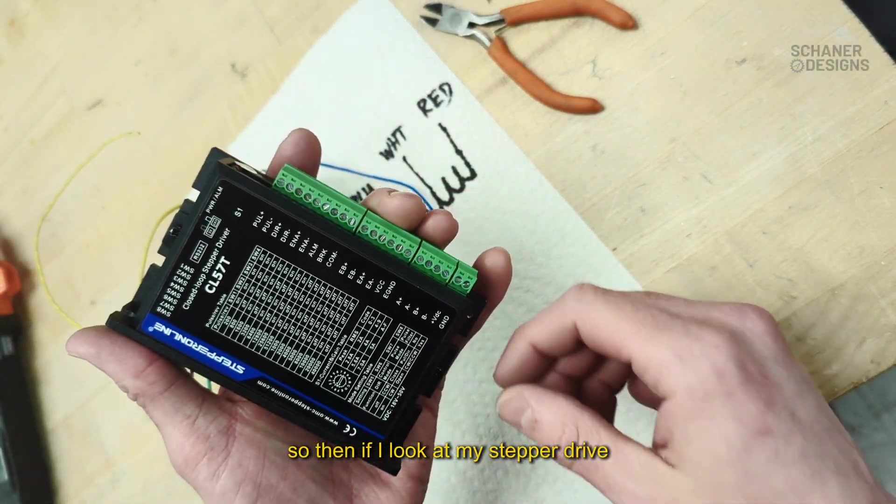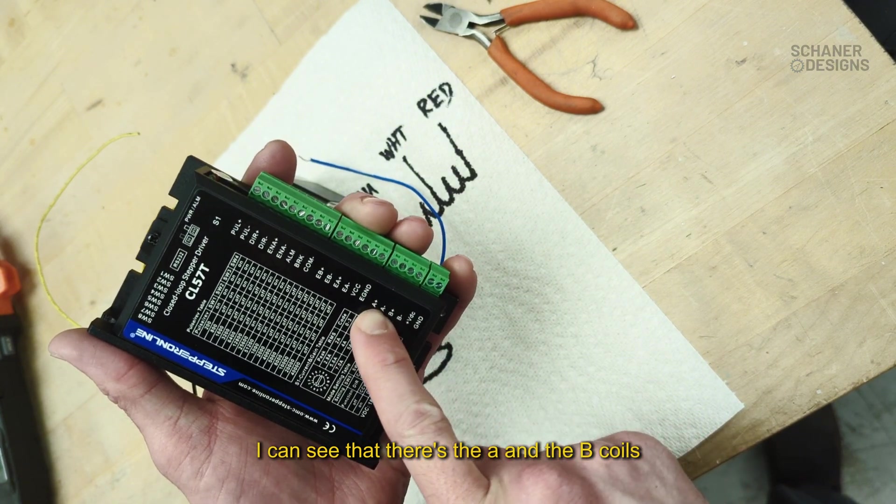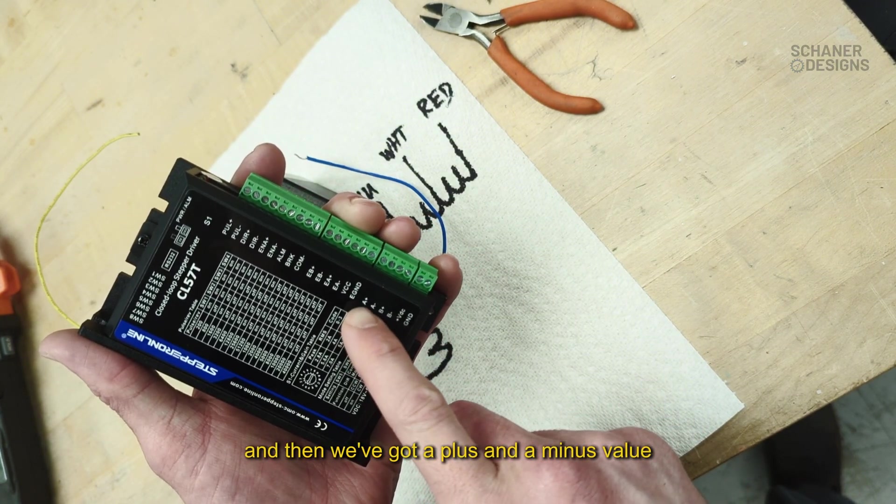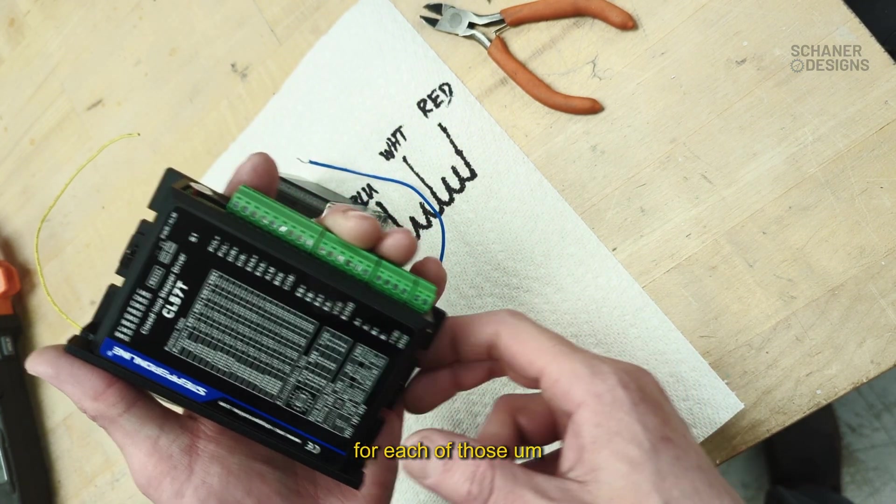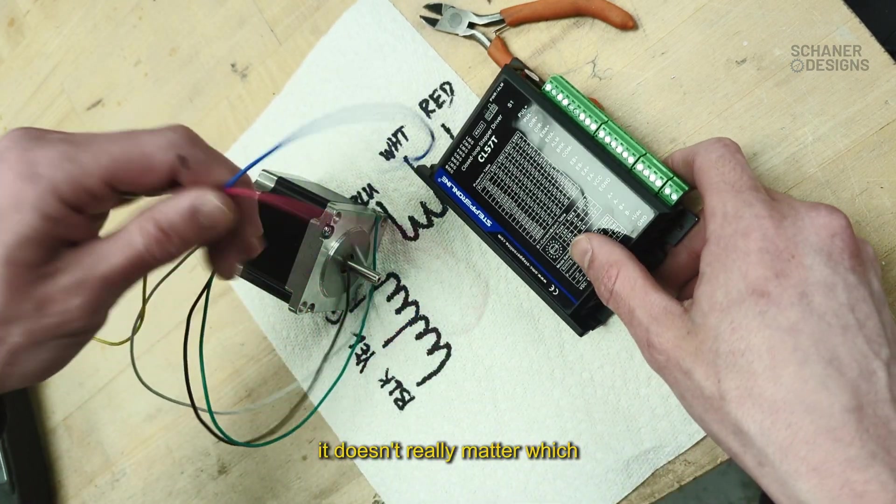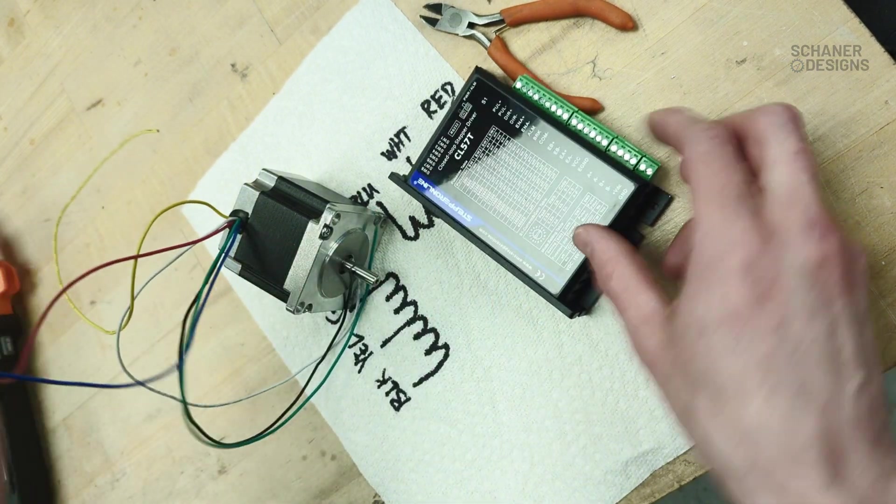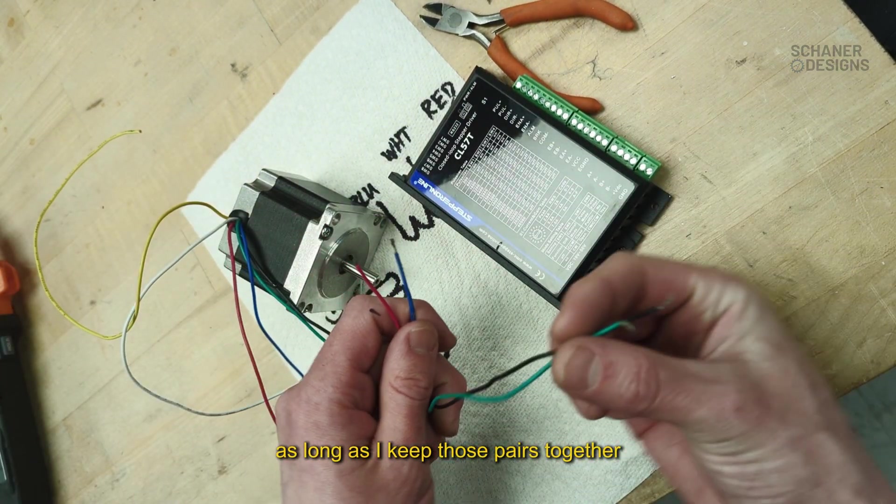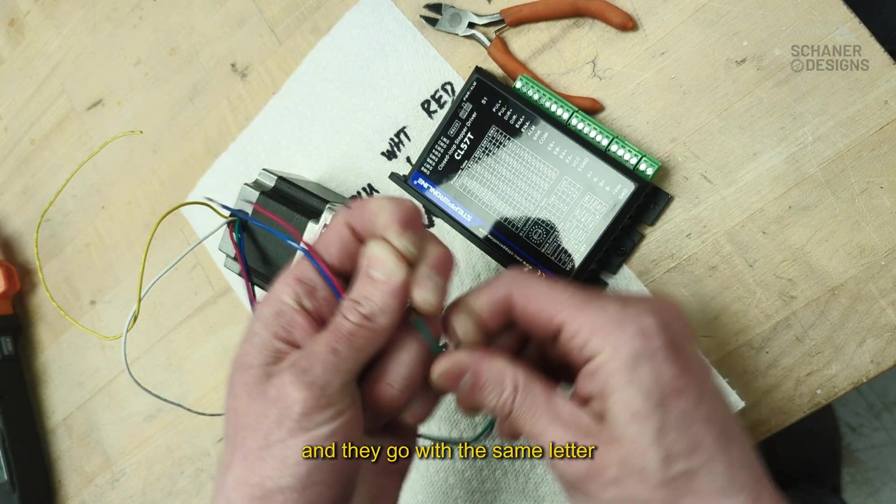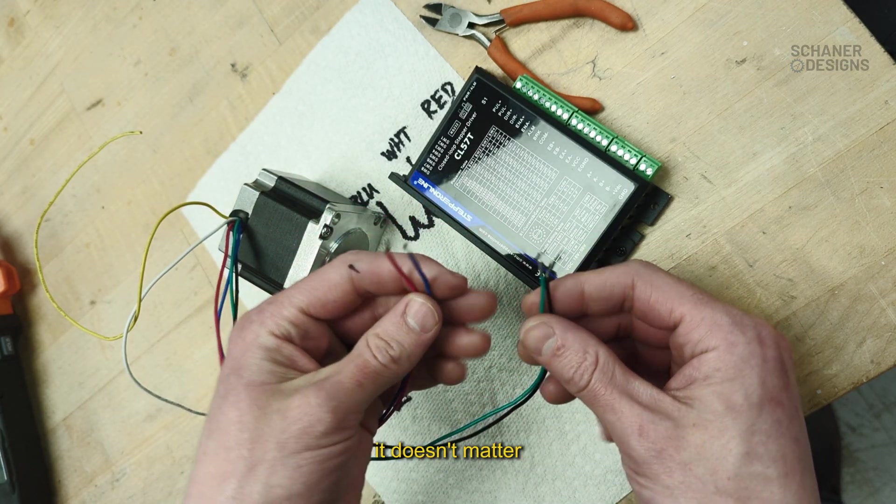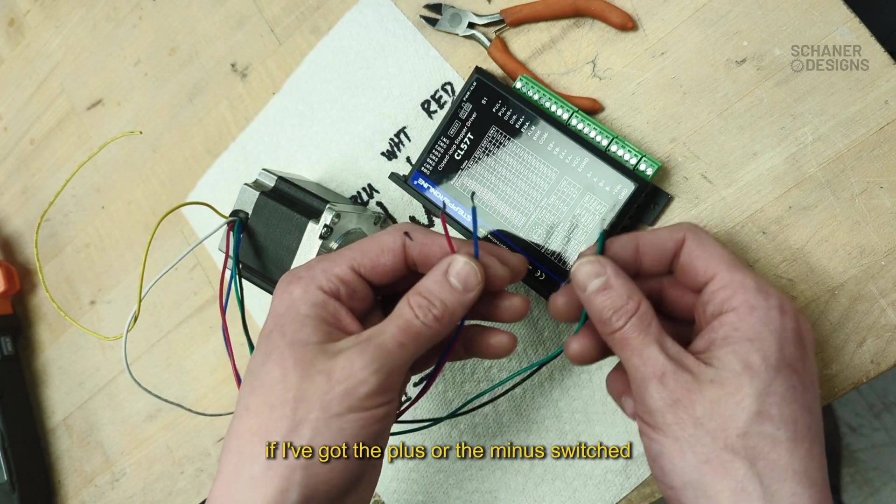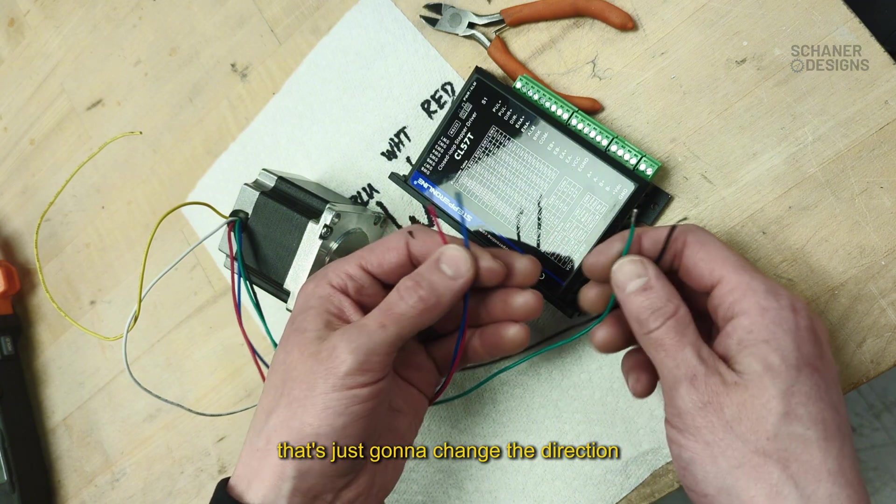If I look at my stepper drive, I can see that there's the A and the B coils, and then we've got a plus and a minus value for each of those. It doesn't really matter which pair I hook up to A or B, as long as I keep those pairs together and they go with the same letter.